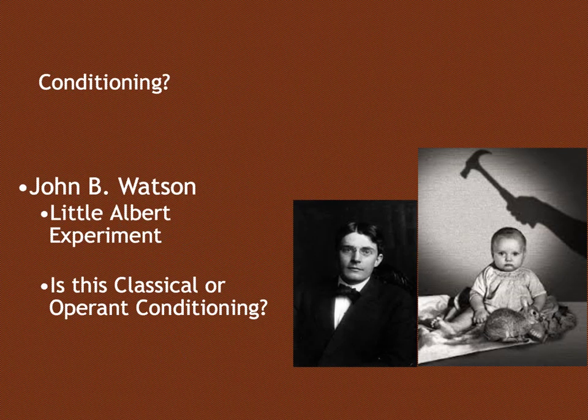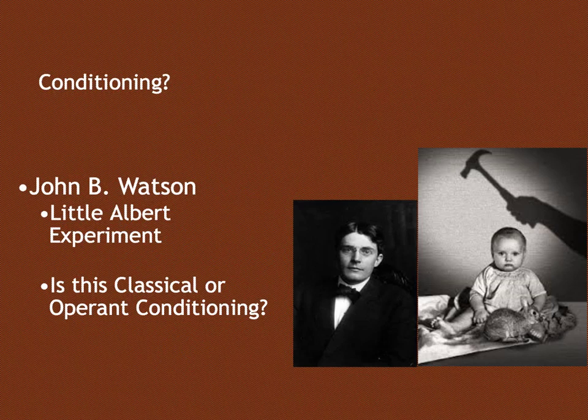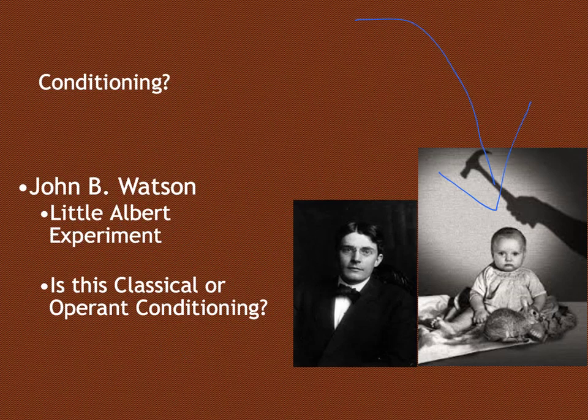One last experiment we'll discuss is John B. Watson, who studied associative learning on human beings. Whereas Ivan Pavlov studied it on dogs, John B. Watson was the first psychologist to study it on humans. He took a little baby named Baby Albert and introduced a little white fluffy bunny to Albert. When Albert saw the bunny, he initially had no response because he had never seen it before.